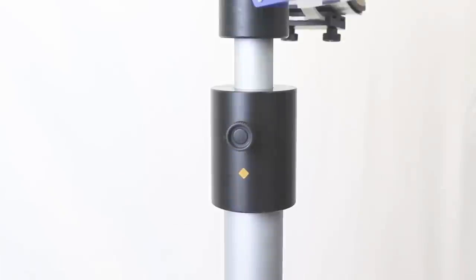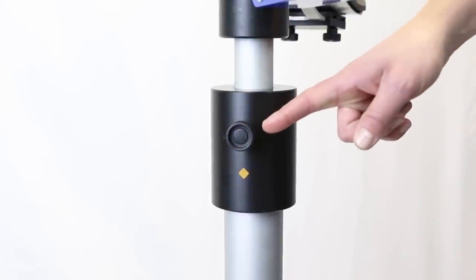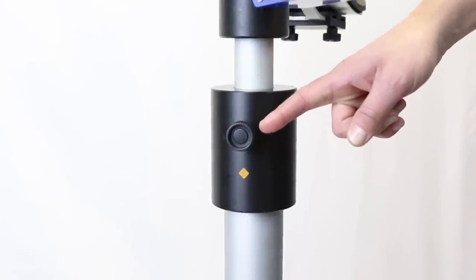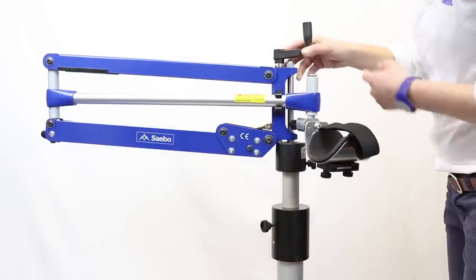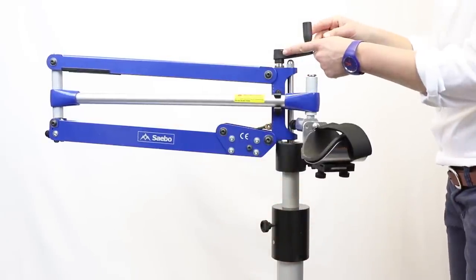I'm going to start by adjusting the height of the device. Using the height adjustable knob to either move the pole up or down. Ideally getting the tension handle in line with your patient's shoulder.